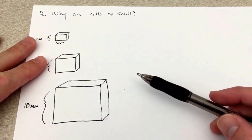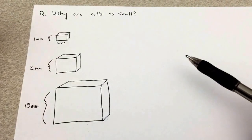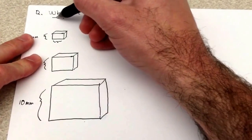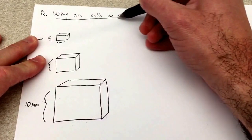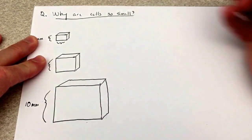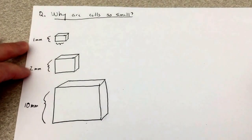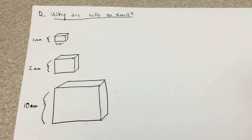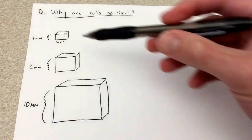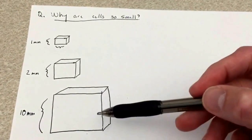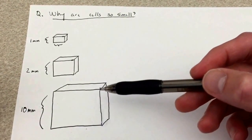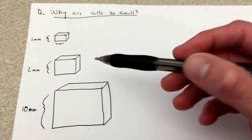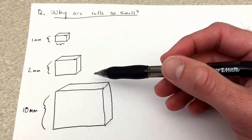Hello, welcome back, and in this next mini video we are going to be answering the question: why are cells so small? So in order to illustrate the answer to this question, I have drawn three cells, and in this illustration these are three cubes of different dimensions.